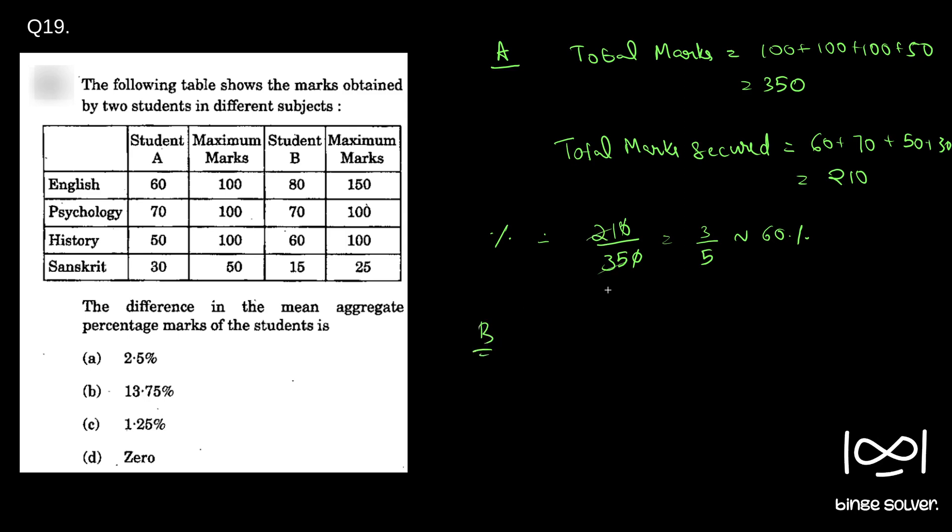Anyway, for B when you do the same stuff, total marks is 350 plus 25, which is 375.